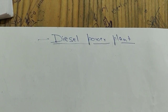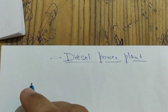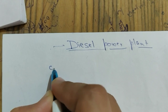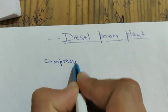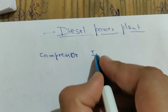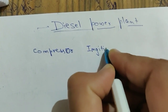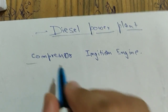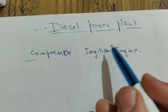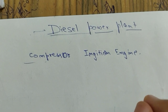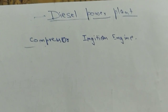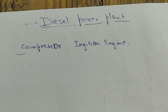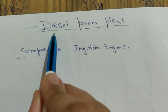Today we will be discussing the layout of a common diesel power plant used in households. The diesel power plant runs on the principle of compression ignition. This means that the air is compressed and the fuel is injected to give a stroke. A stroke is one cycle of the engine.